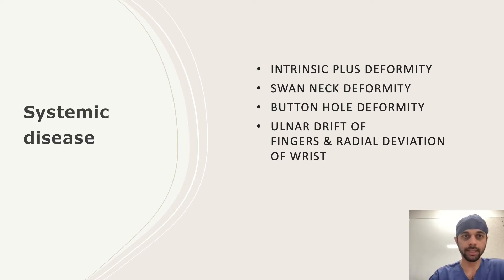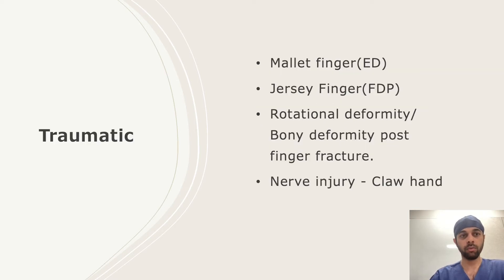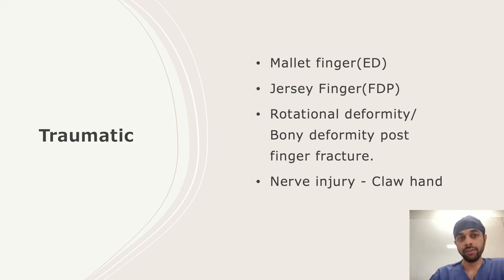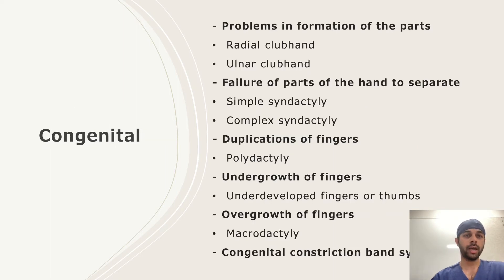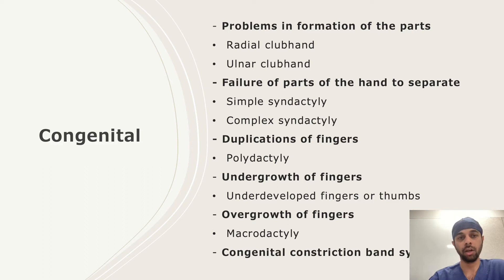The second cause is traumatic — mallet finger with extensor tendon rupture, jersey finger with rupture of the flexor digitorum profundus, rotational deformities and bony deformities post finger fracture, and nerve injuries leading to claw hand. For degenerative causes, we have osteoarthritis with Heberden's and Bouchard's nodules leading to deformities of the finger. And finally, congenital causes — not that common, but can result in many deformities: problems in formation such as radial club hand, failure of separation such as syndactyly, duplications like polydactyly, undergrowth or overgrowth, and congenital constriction band syndrome. These are usually rare and I won't go into detail.